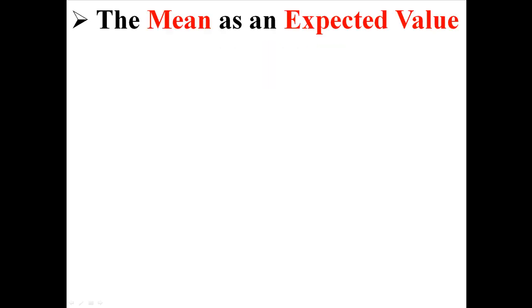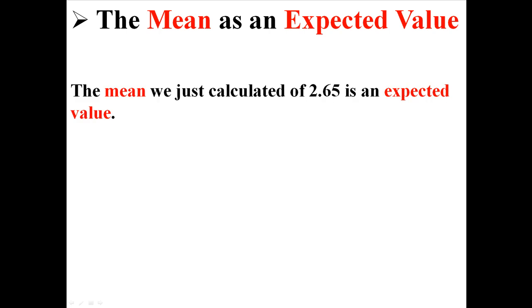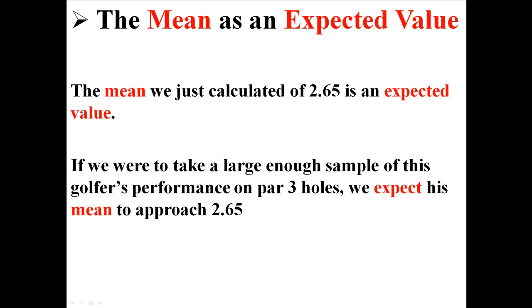So now I'm going to talk about the mean as an expected value. The mean we just calculated of 2.65 is an expected value. If we were to take a large enough sample of this golfer's performance on par-3 holes, we expect his mean to approach 2.65.